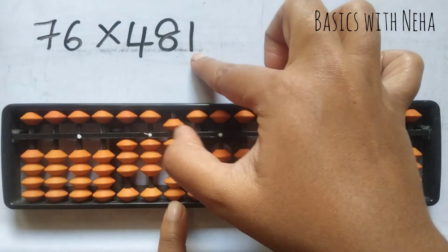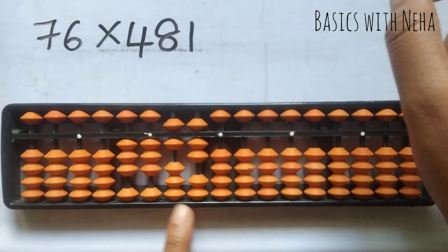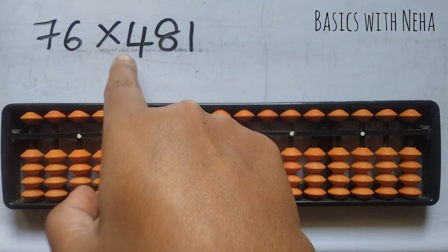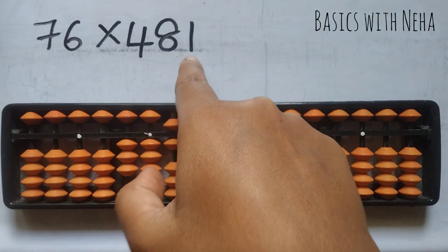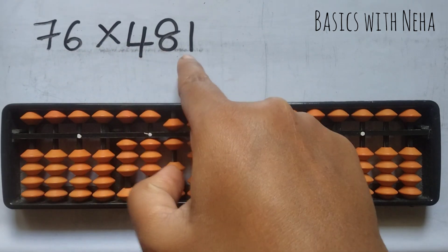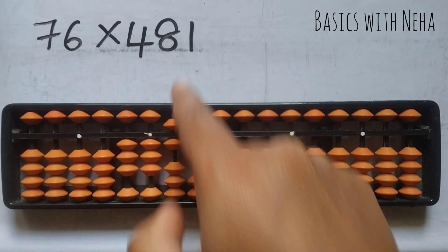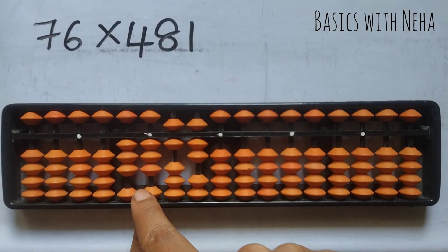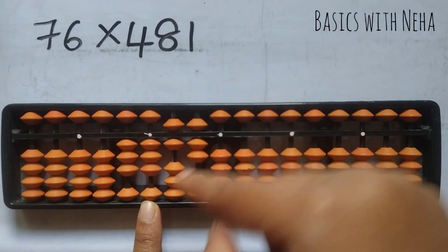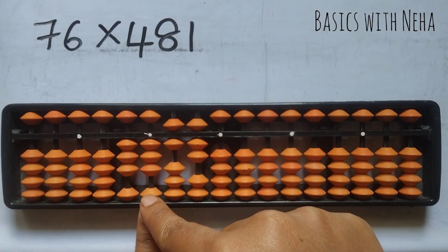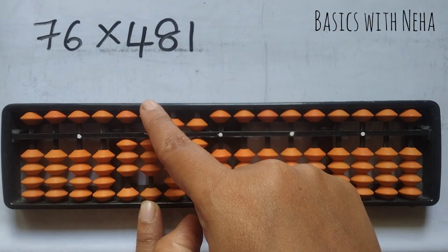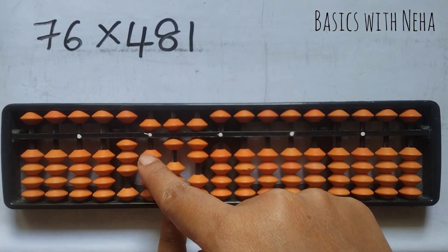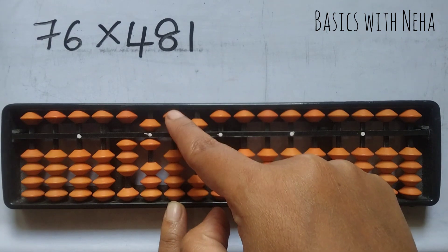7 ones are 7. It will be 0, 7. Now we are done with 7 into 481. Now we have to do 6 into 481. There are 4 numbers, start from the 4th rod, that is the thousands place. 6 fours are 24. To place 2 here, it is plus 5 minus 3. To place 4 here, it is plus 10 minus 6.